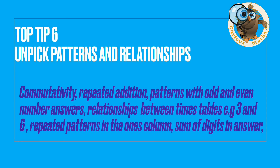Top tip 6: Do some pattern sniffing and connection making. We've talked about commutativity, but it's really important to give children opportunities to investigate the times tables and see what patterns they notice. Create opportunities to look at certain times tables, make comparisons, look at the answers, look at the repeated pattern within the ones column. By unpicking patterns and relationships, children develop a better understanding of right answers and can spot mistakes. It's really important to get them talking.